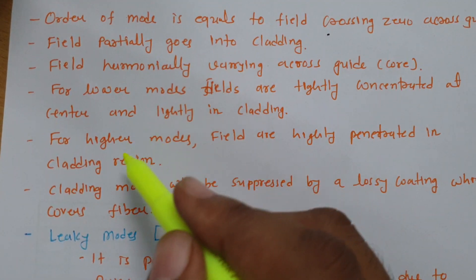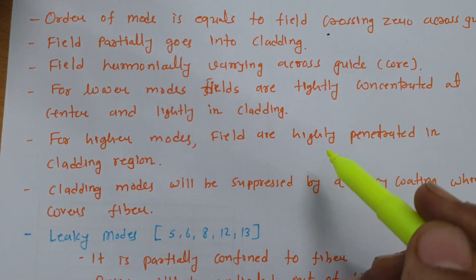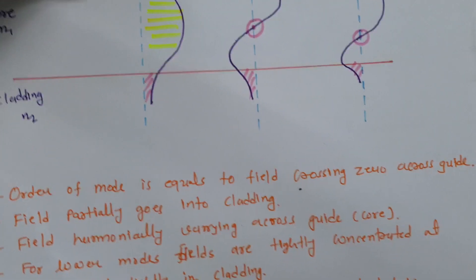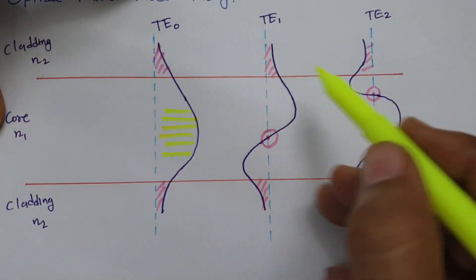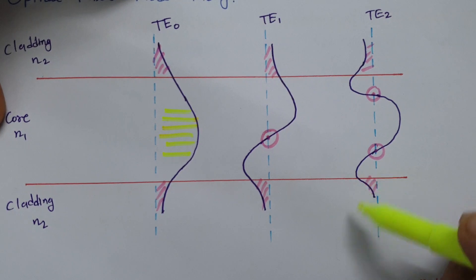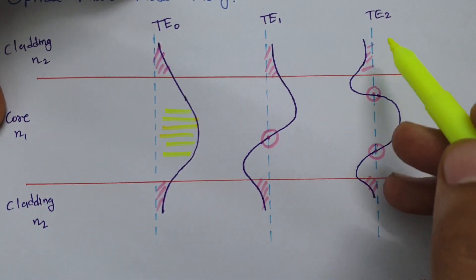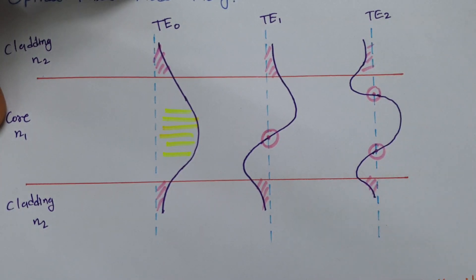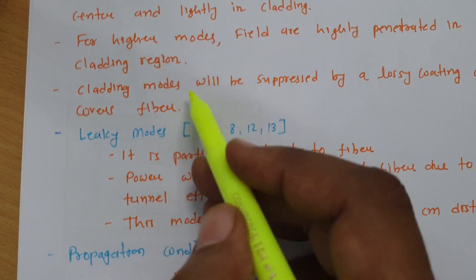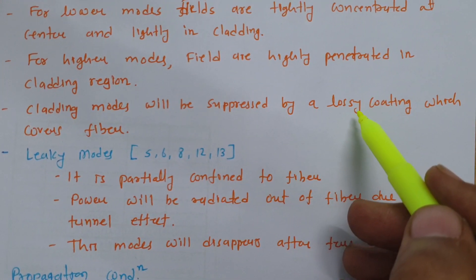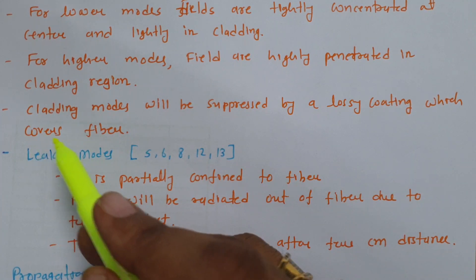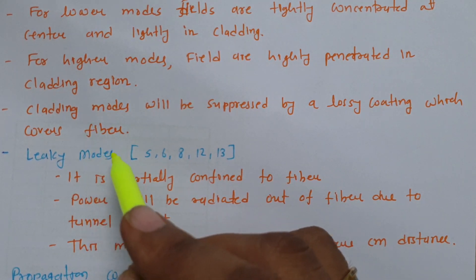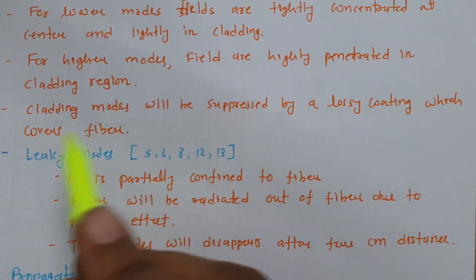As you increase the mode number, for higher modes the field is highly penetrated into the cladding region. The field penetrates more inside the cladding side as you increase the number of modes. Cladding modes can be suppressed by using a lossy coating on the covers of the fiber.